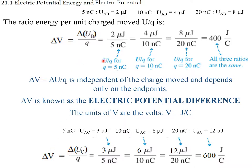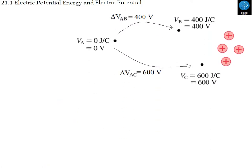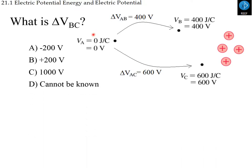Now we apply this to the same points A, B, and C. Before we were moving charges between A and B; here we move between A and C. The voltage at C — the difference in electric potential — turns out to be 600 volts. If the voltage at A is zero and the difference between A and B is 400, then the voltage at B is 400 volts. We're now talking about points in space, not specific charges — we've divided the charge out.